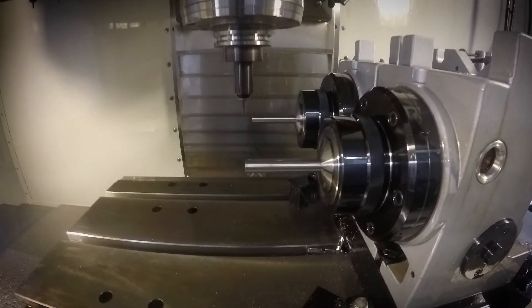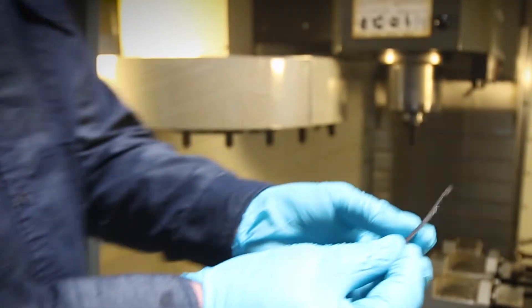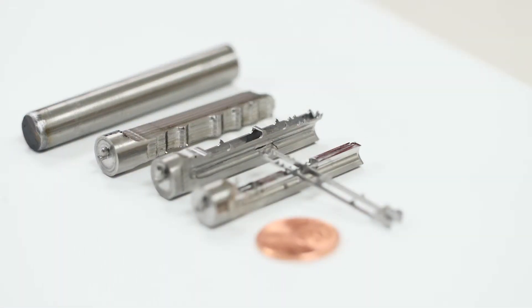We have the process dialed in to a point now where we take a solid bar of stock, put it inside the collet, push the button, finished product comes off the machine, almost ready to go to assembly.